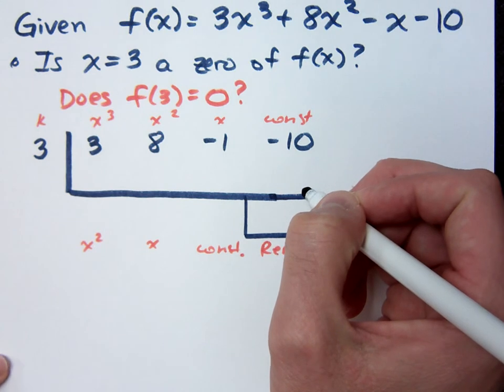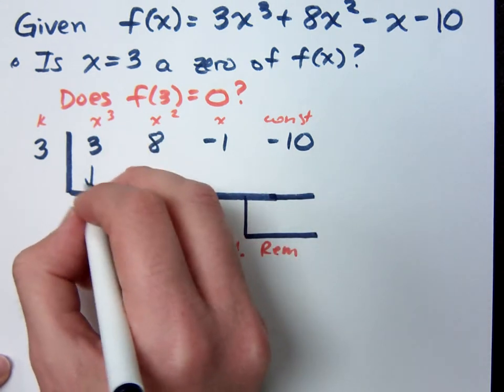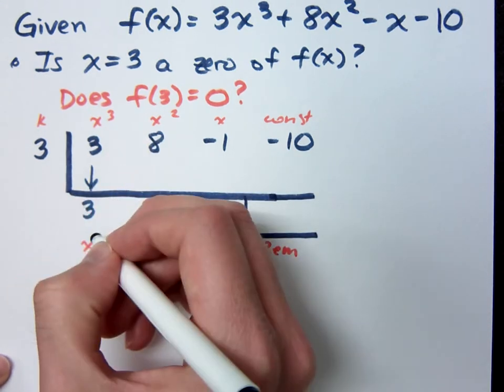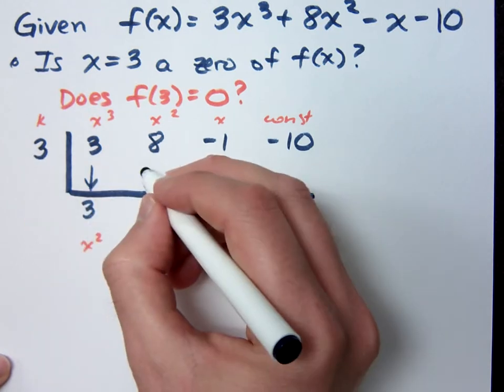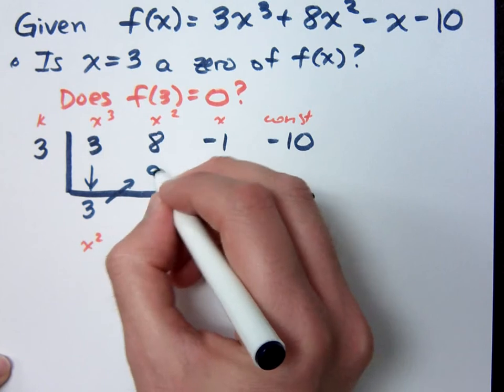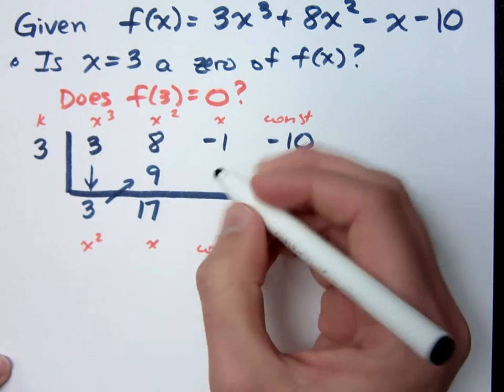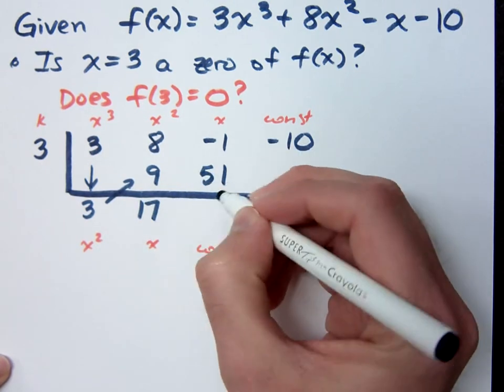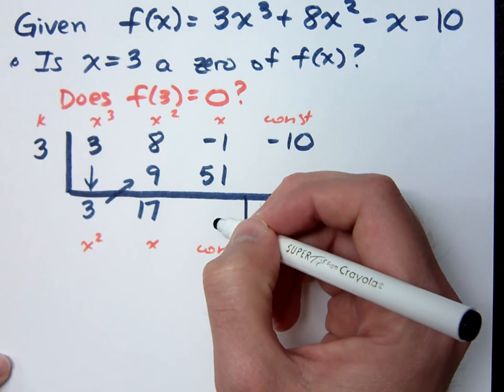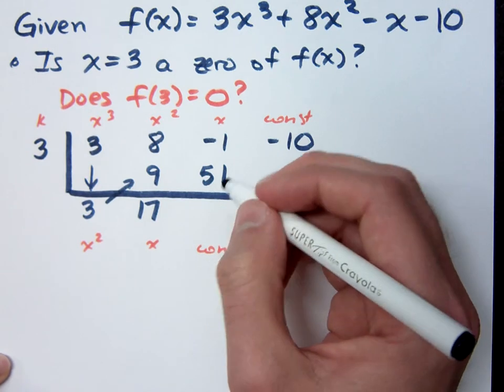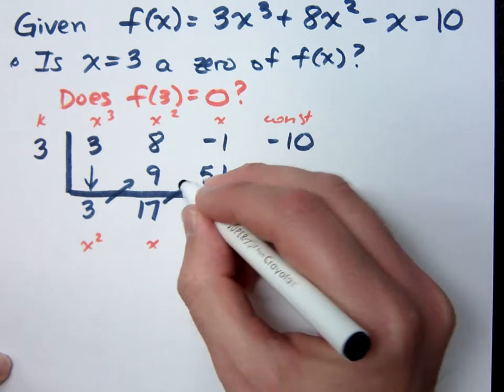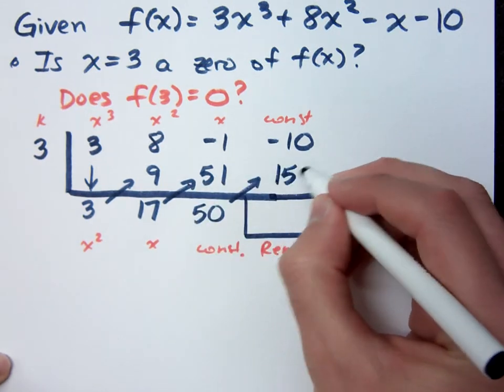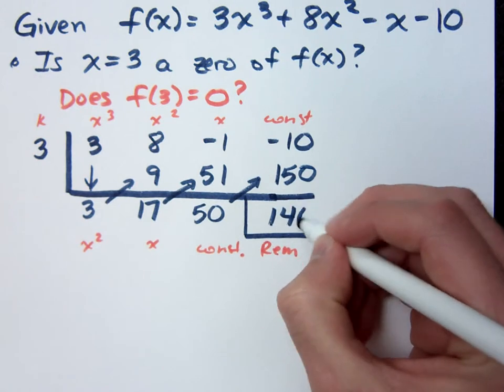You know what to do. Bring down the 3. 3 times 3 is 9. It gives me 17. 17 times 3 is... Do you feel that these numbers are getting way out of control and you're not going to get 0? Stop! Don't do it! Well, I just can't help myself.